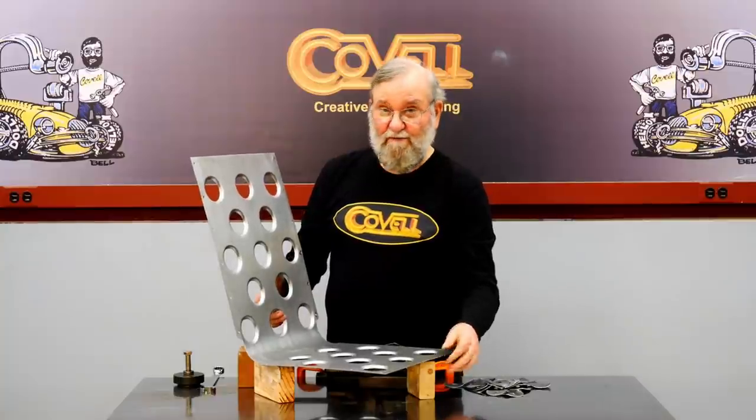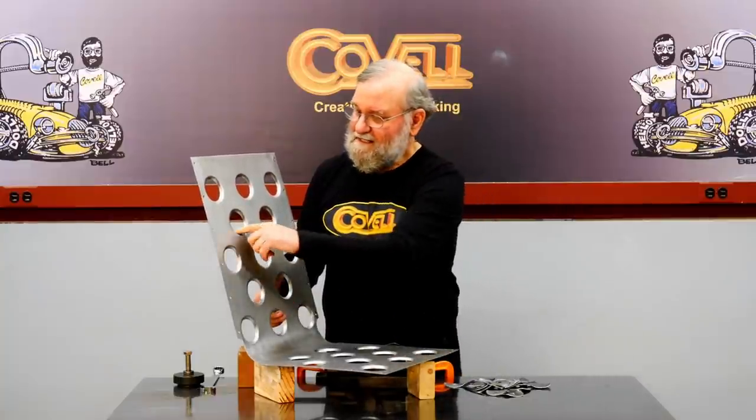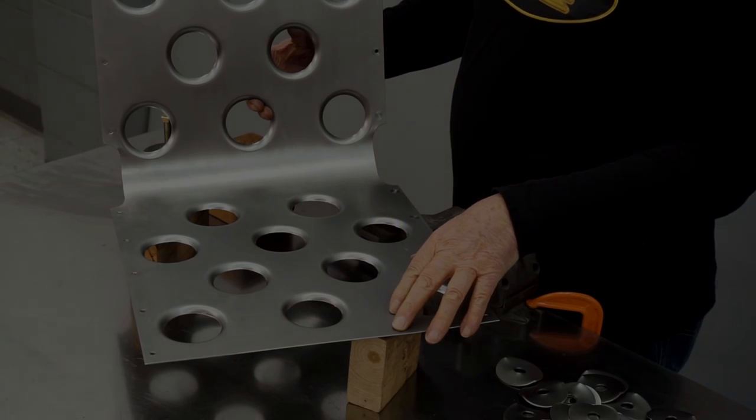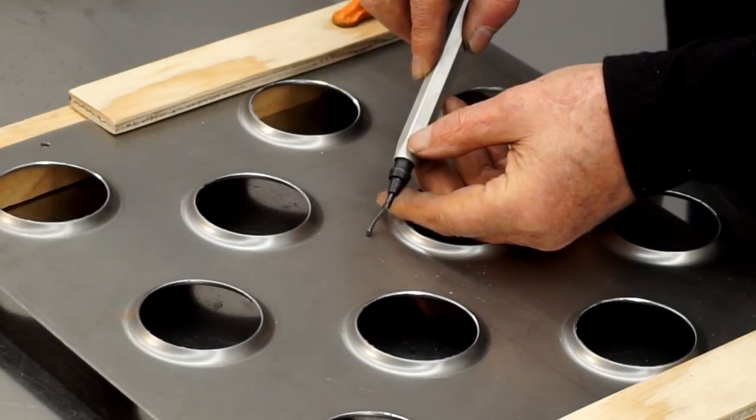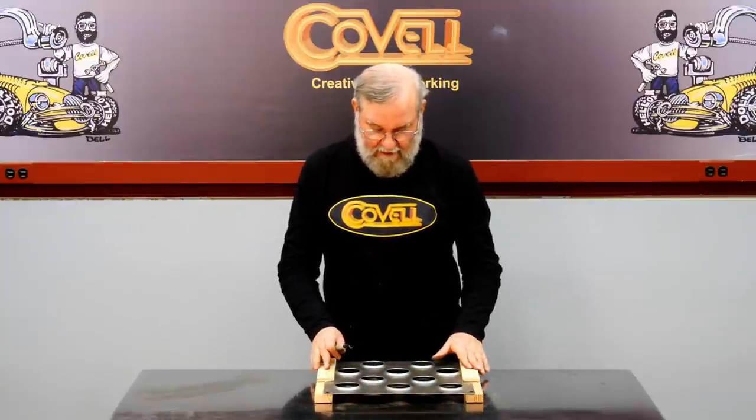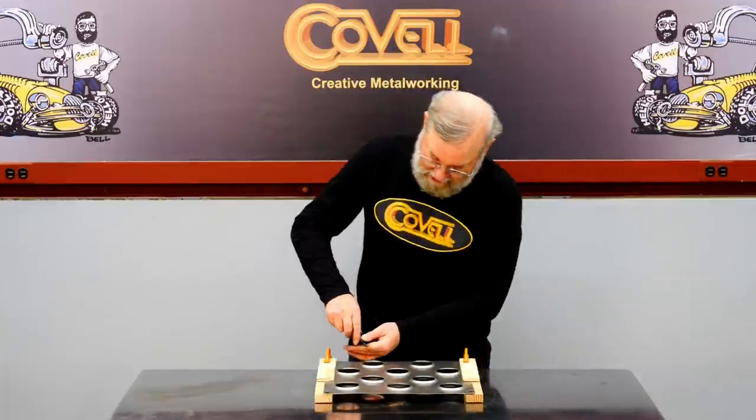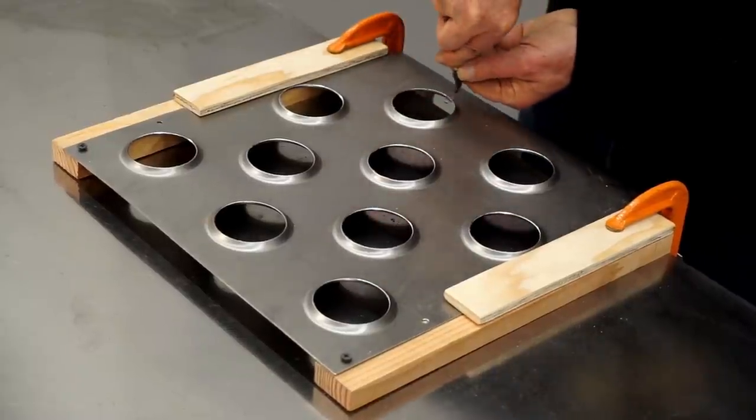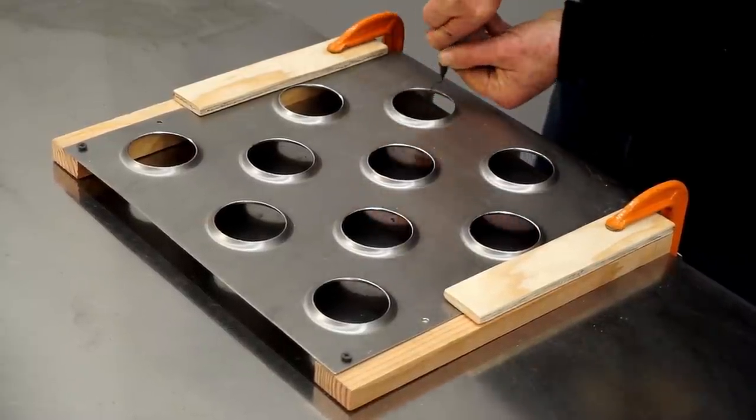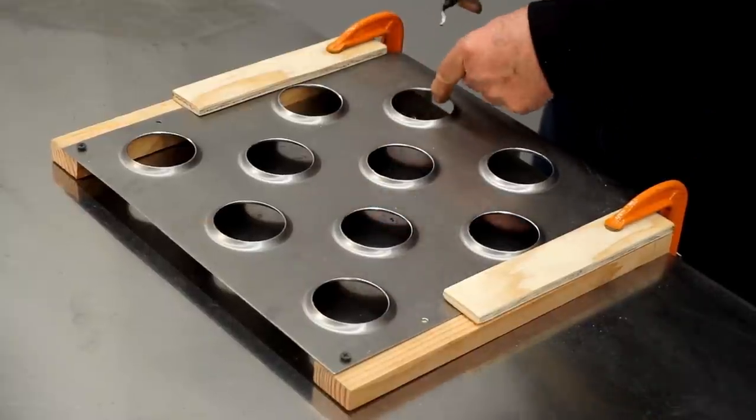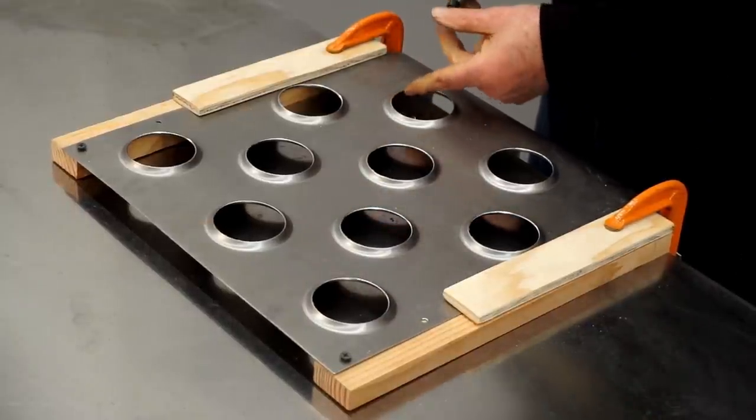So one last thing I want to do before I reassemble the seat is to deburr these edges. The punches leave sort of a sharpness on the edge, and this is the best time to fix that. I've got a deburring tool here that'll make fast work of cleaning up these holes. I've clamped the part down so I can put some good steady pressure on it. And that does an excellent job of cleaning up the burr.